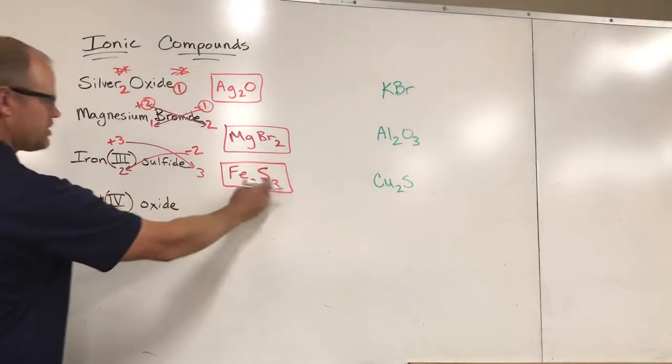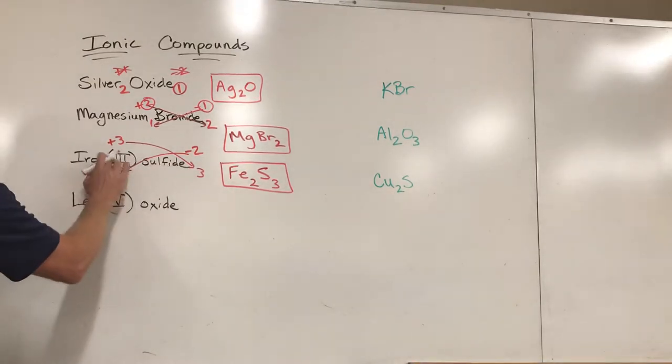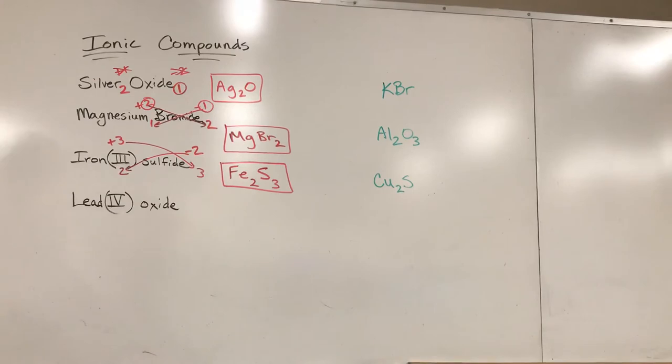We don't have to put the roman numeral in the formula because the charges and the amount that are there actually tell us that information. But in the name it's required because you don't know which form of iron we're dealing with and there's no numbers there in the name that tell you that. That's why the roman numerals exist.